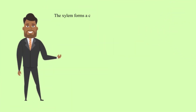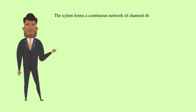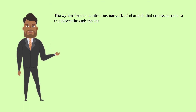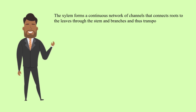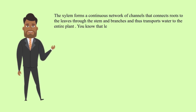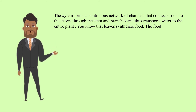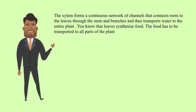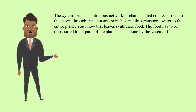The xylem forms a continuous network of channels that connects roots to the leaves through the stem and branches, and thus transports water to the entire plant. Leaves synthesize food, and that food has to be transported to all parts of the plant. This is done by the vascular tissue called the phloem.